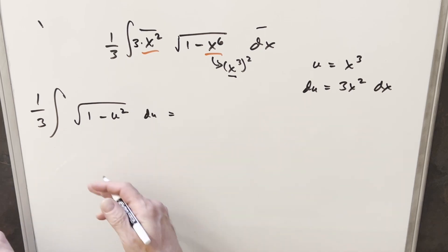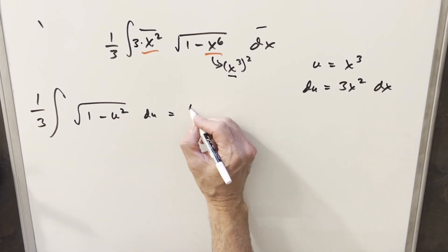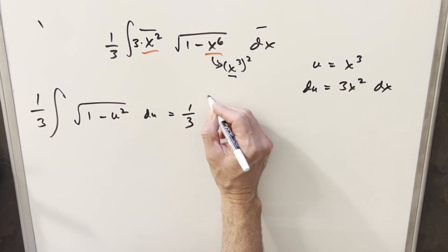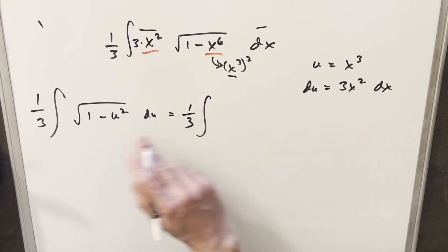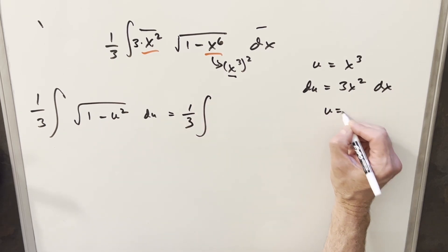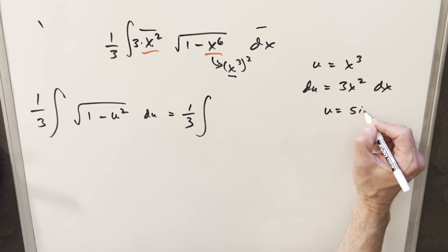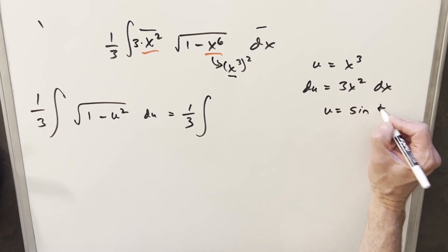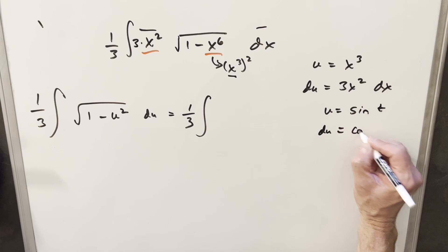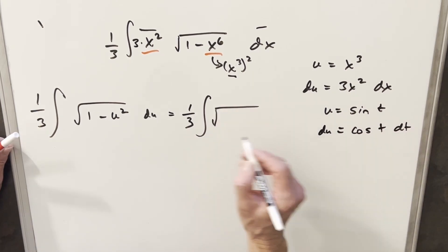And notice we could have done one substitution. But in this case, I kind of like to do it as 2 just to make it more clear. So I'm going to bring my 1 third up front. Now for the substitution, I'm going to say we're going to call u equal to sine of t. And I'm going to take a derivative. So for my du value, I'm going to have just cosine of t dt.